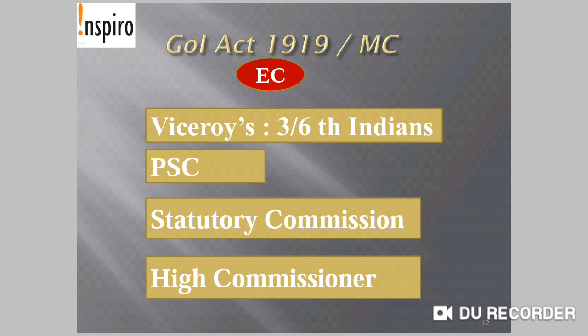For executive-related provisions under the Government of India Act 1919: the Viceroy's Executive Council would now have three-sixths of its members as Indians. A new Public Service Commission was formed, and a statutory commission was to be constituted for studying the working of the constitutional system in India. A High Commissioner post was formed in London, and some functions of the Secretary of State were transferred to the High Commissioner.